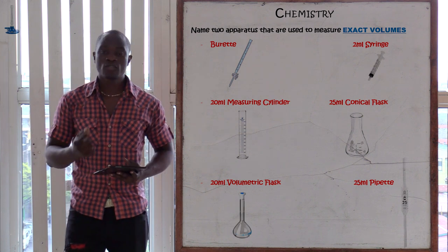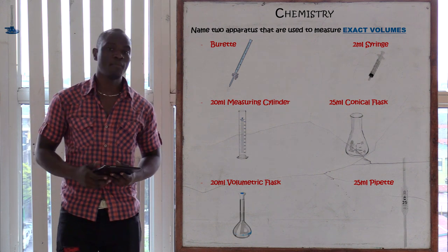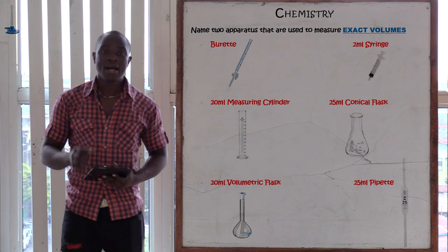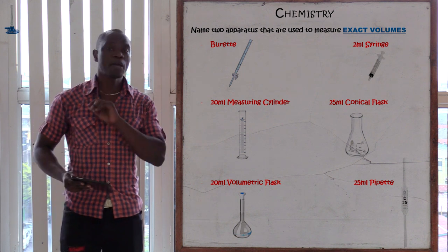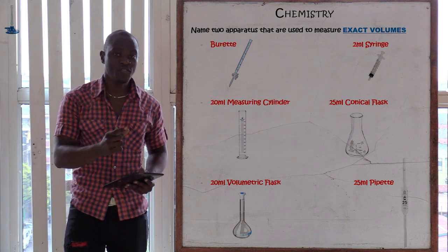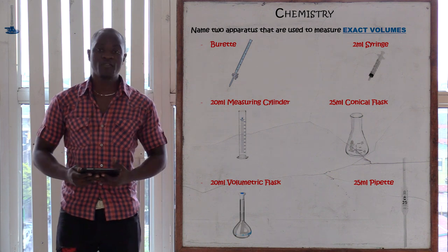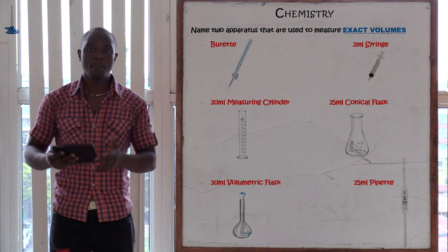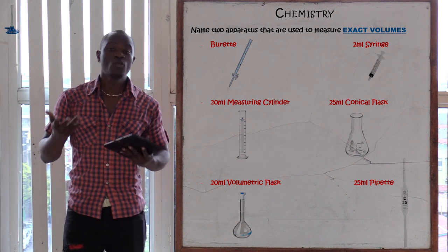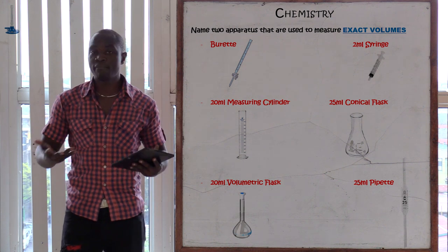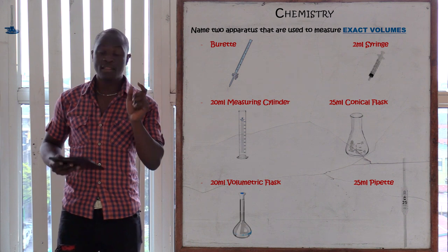We can use a burette to measure exact volume because a burette has markings like a ruler to see exactly the amount of volume required. Apart from the burette, we have a 25 ml pipette or a 20 ml pipette. If you only indicate your answer as 'pipette' only, you are going to get it wrong because the question is specific — it asks to measure exact volume. You must be specific and say 25 ml pipette or 20 ml pipette. That is an exact volume.